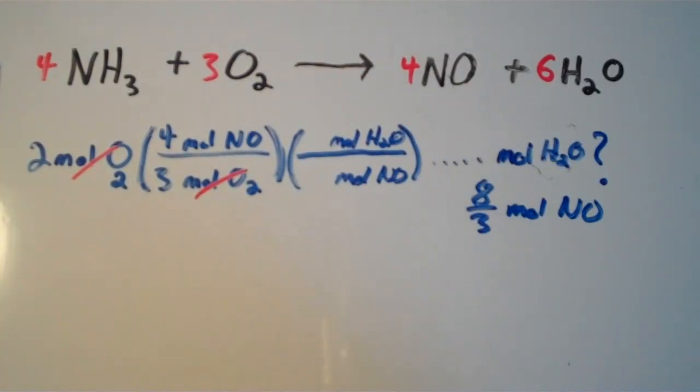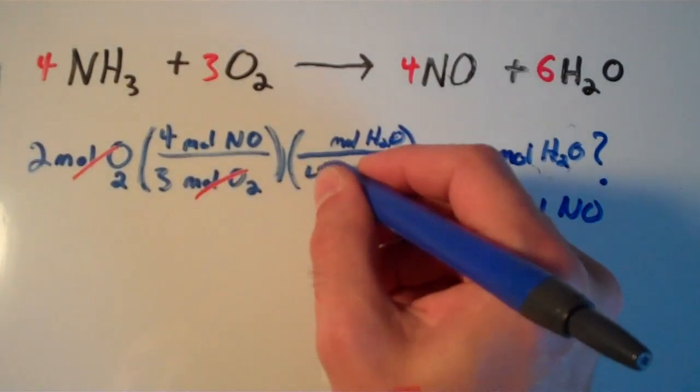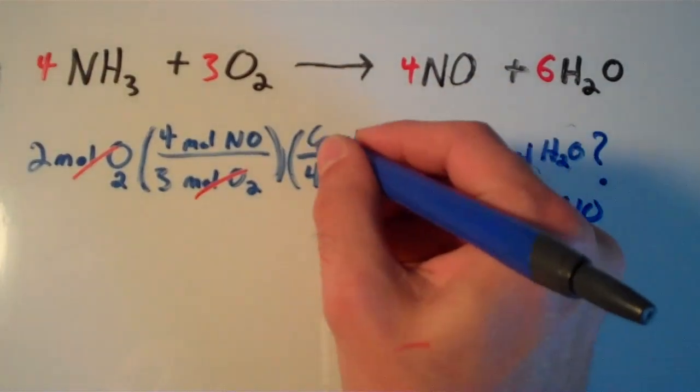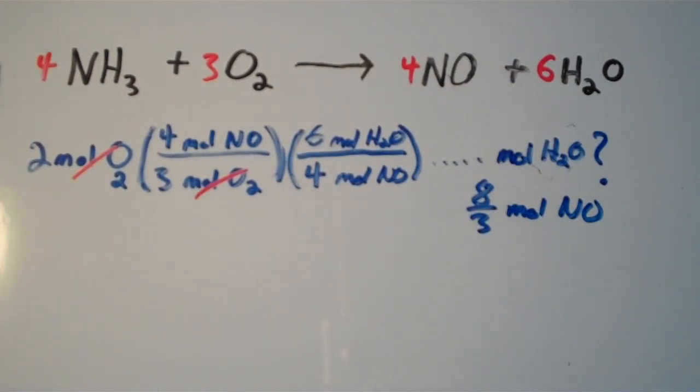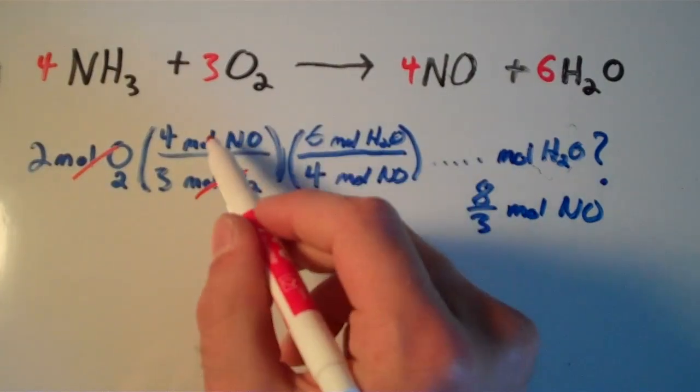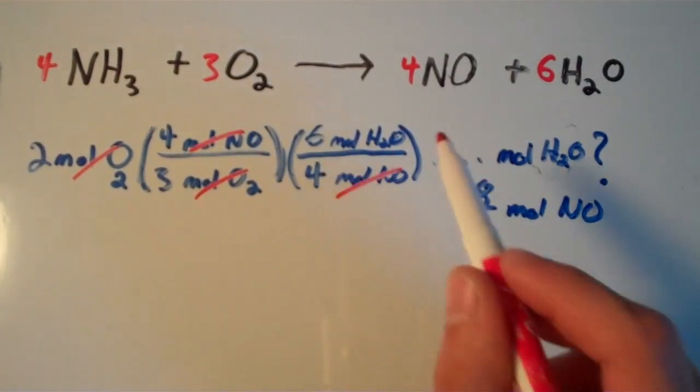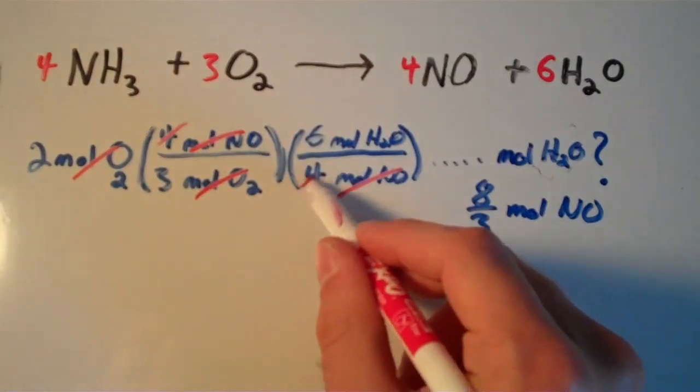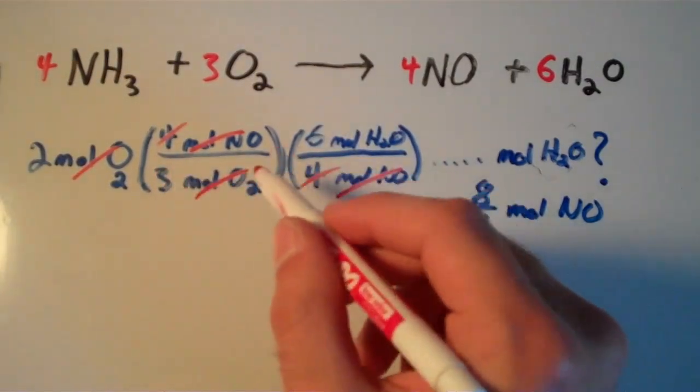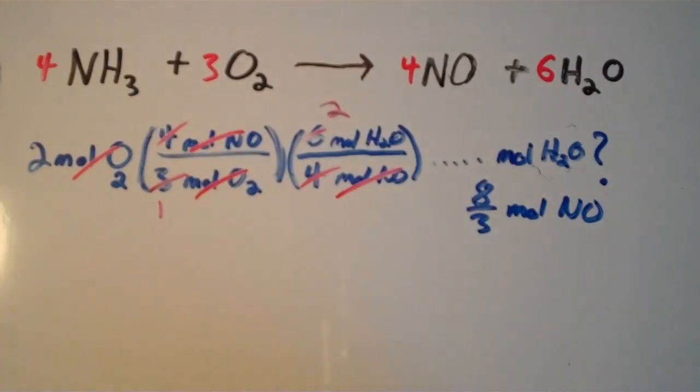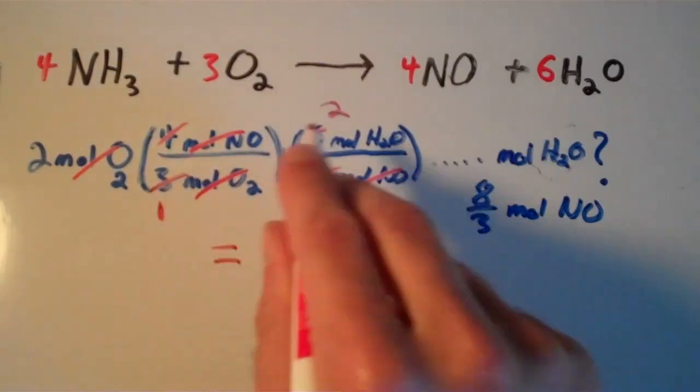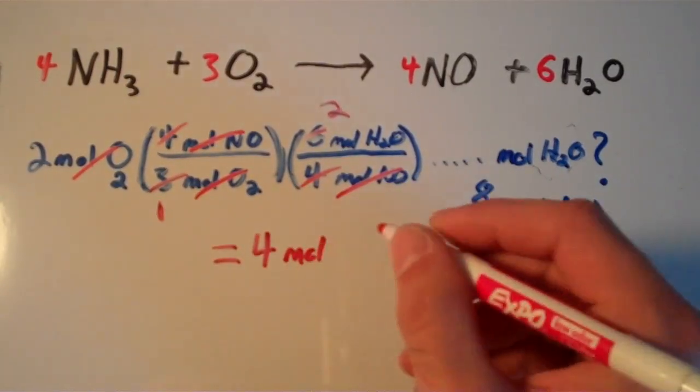Once again, look at the coefficients. The coefficient in front of NO is still 4, and the coefficient in front of water is 6. Making sure our units cancel, moles of NO cancels out. All we have to do is solve. The 4's cancel, and 6 over 3 reduces to 2 over 1. So our total answer for moles of water is 2 times 2, which is 4 moles of water.